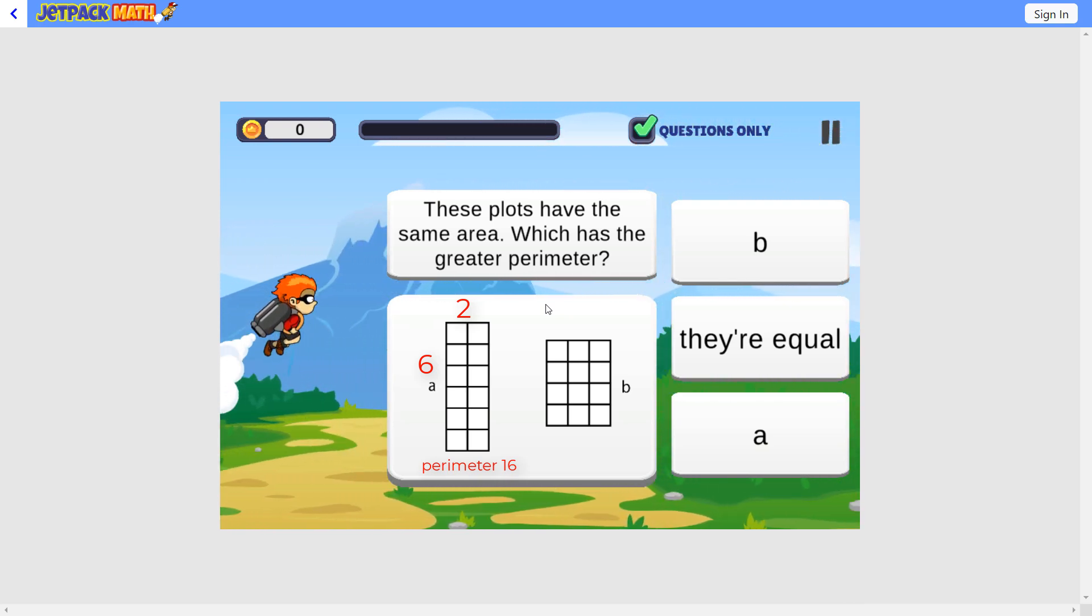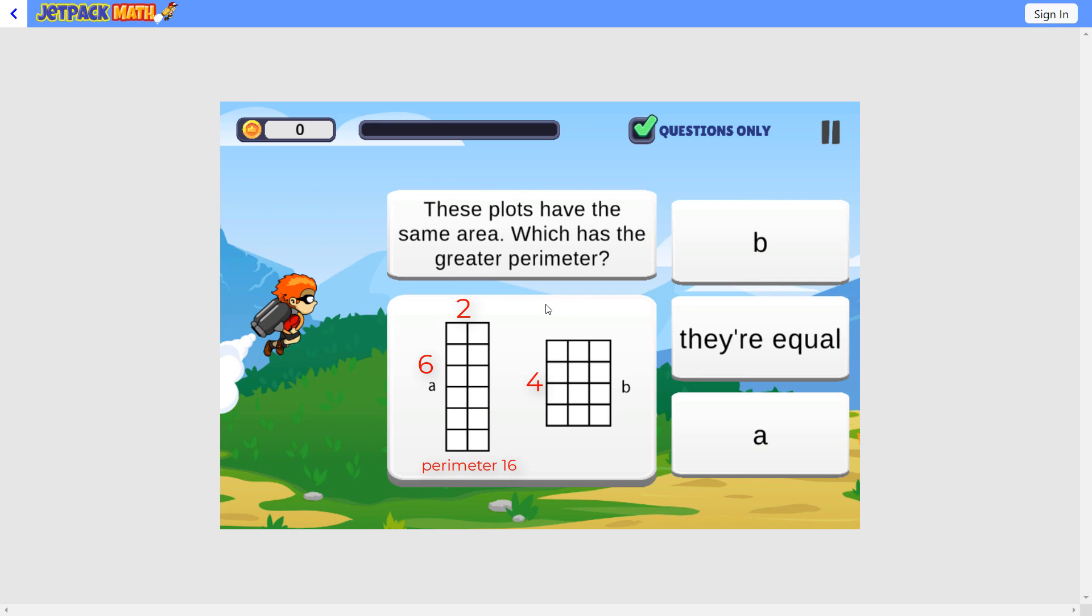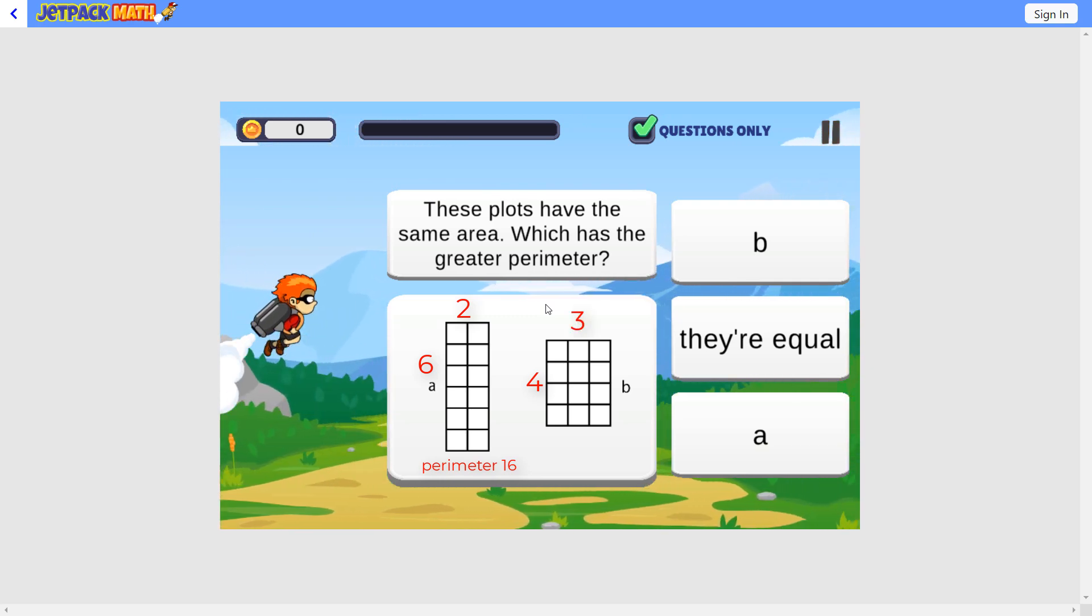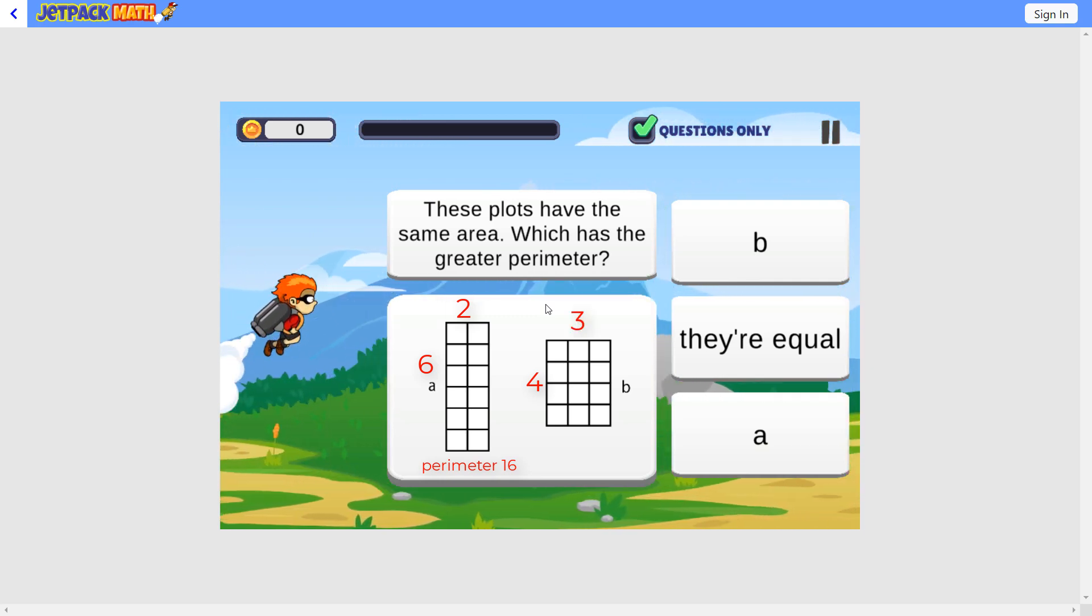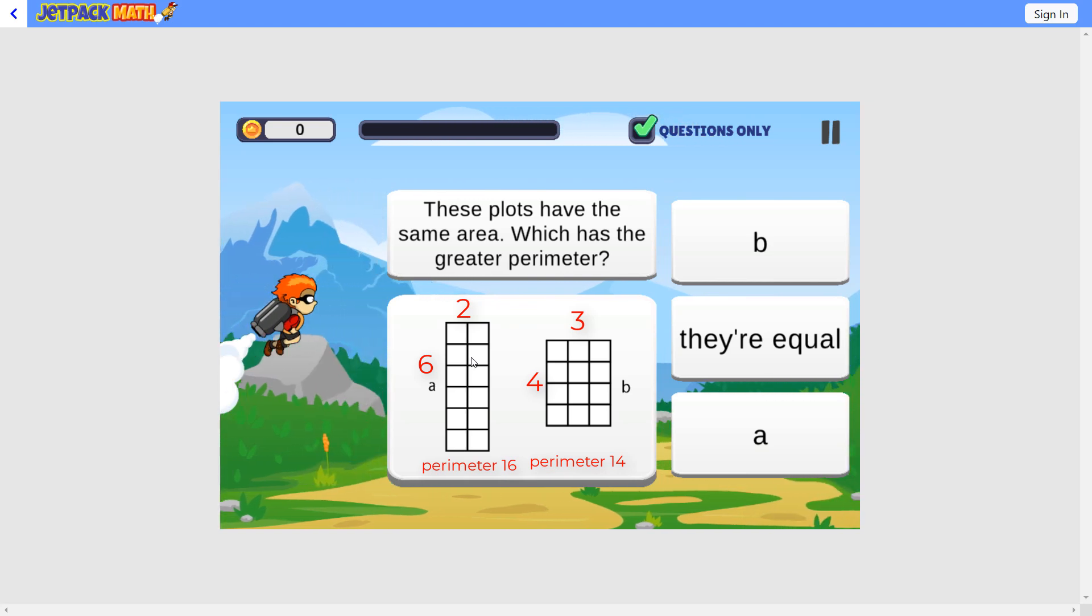And on B, we have 4 plus 3, which is 7. 7 times 2 is 14. So A has the bigger perimeter.